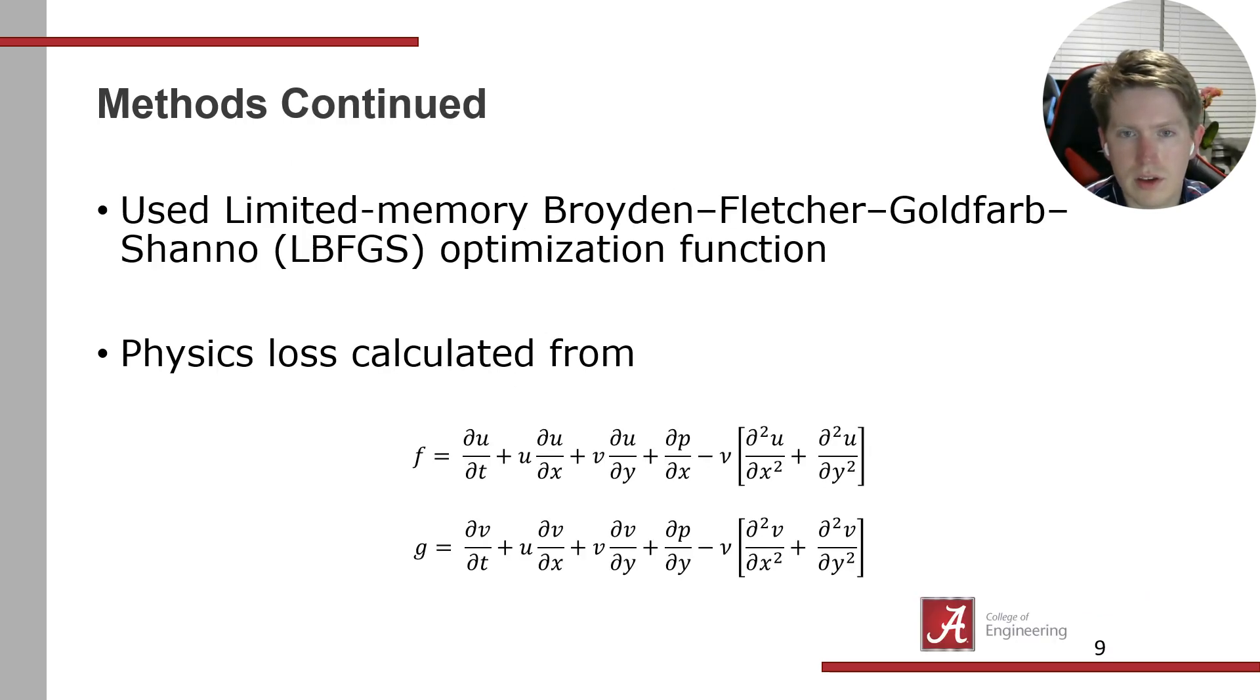For optimization, we use the Limited-memory Broyden-Fletcher-Goldfarb-Shanno (LBFGS) function. I typically use Adam, so this was my first time with LBFGS. I used the existing PyTorch function. For physics loss, we took those equations and moved the right-side terms to the left, so they should equal zero. We set the result equal to F for one component and G for the Y component, then add those together and add it to the traditional loss, which is the mean squared error for U and V.